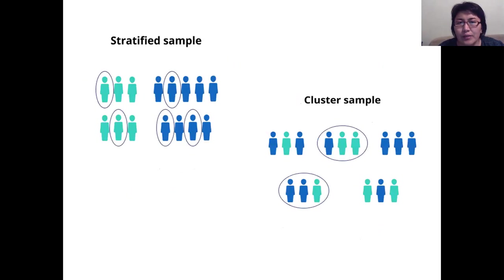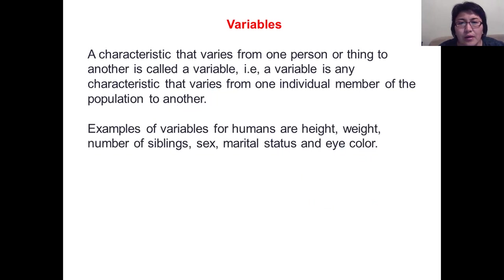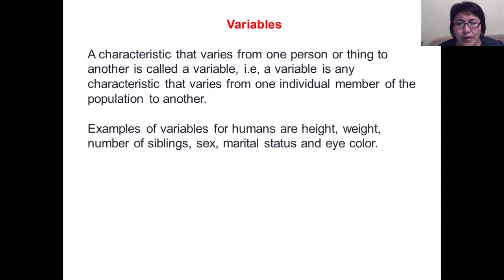In the next video, we will talk about these sampling methods. The next basic concept is variables. A characteristic that varies from one person or thing to another is called a variable. A variable is any characteristic that varies from one individual member of the population to another.